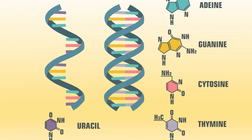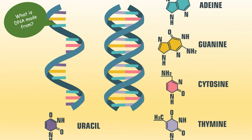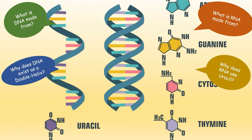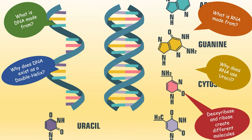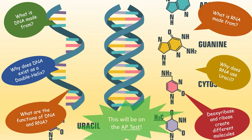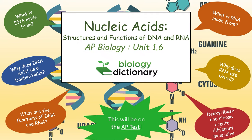The cells in your body rely on two different molecules to store information and turn that information into functional proteins: DNA and RNA. These two nucleic acids take very different forms, with DNA as a double helix and RNA as a single strand. However, these different structures are not just a quirk of nature — these structural differences lead to very real functional differences. Stick with us as we go through the structure and functions of DNA and RNA.